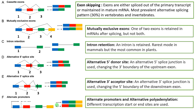So these are the seven types of alternative splicing. In short, alternative splicing is a mechanism that helps a single gene to code for many related proteins.